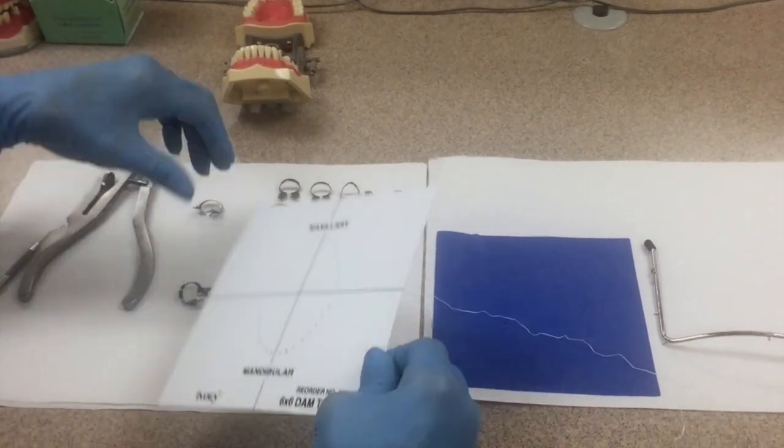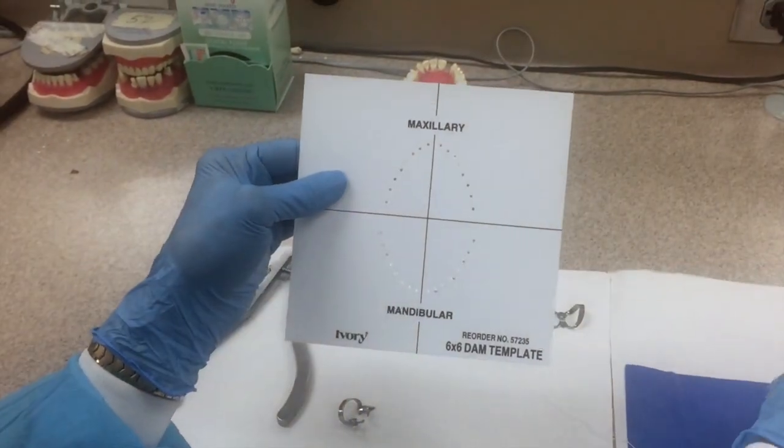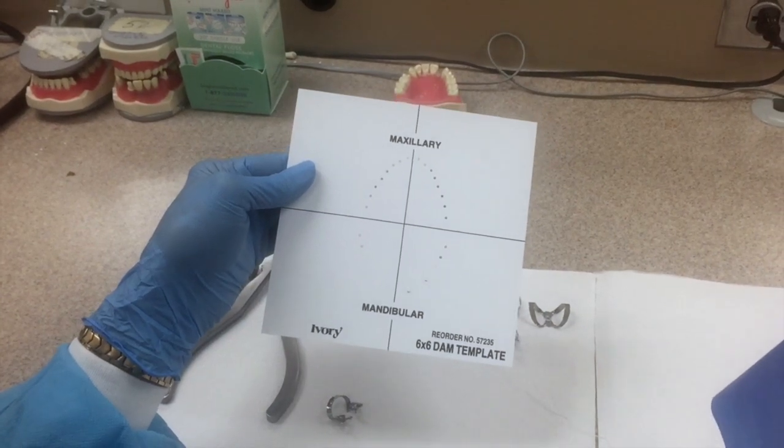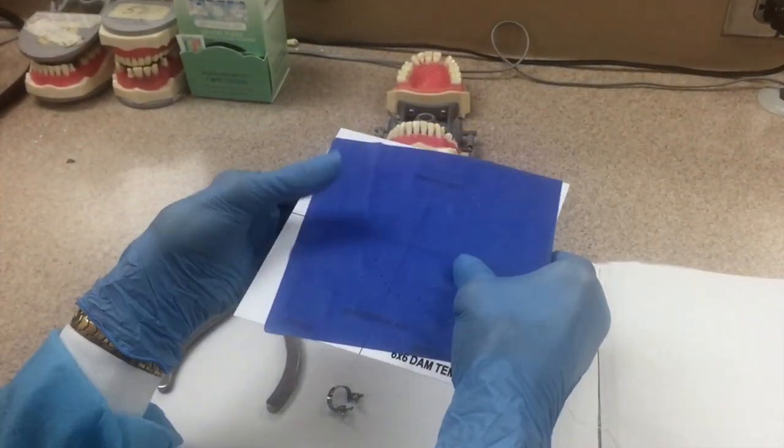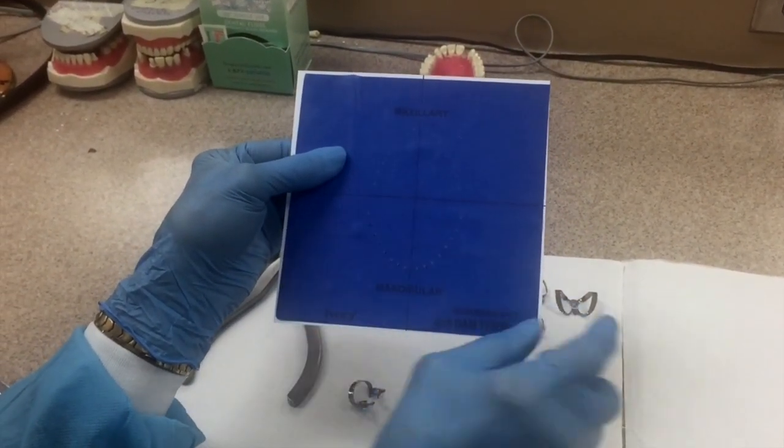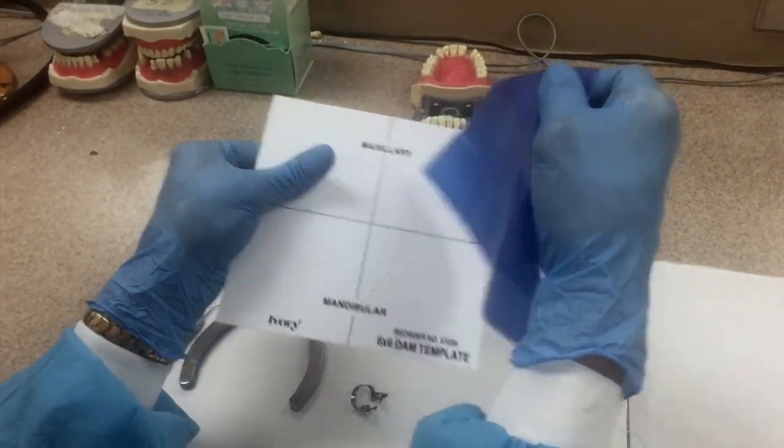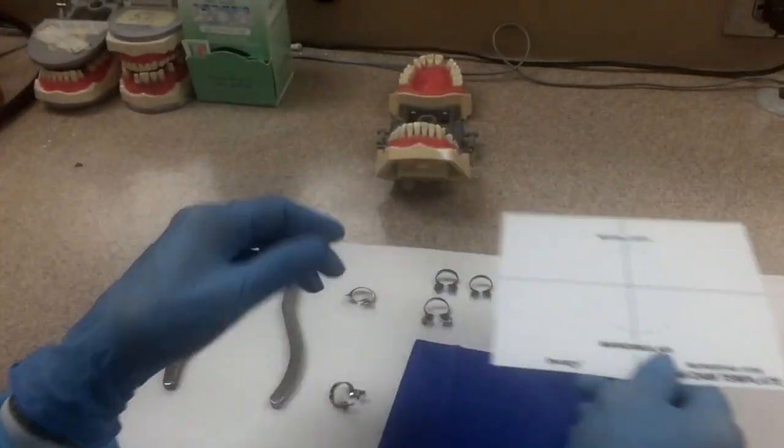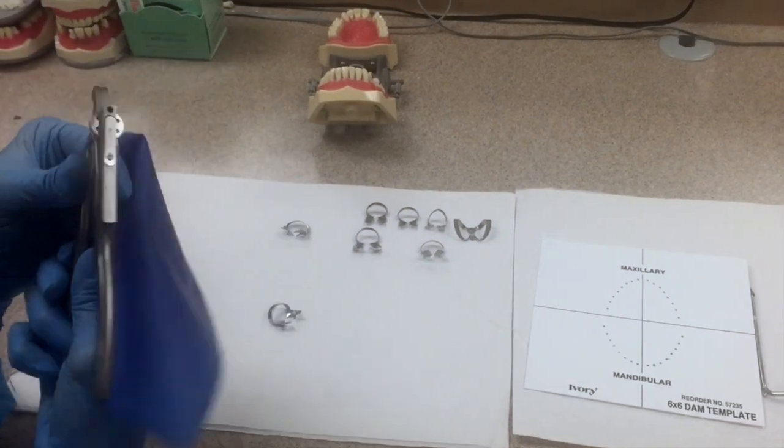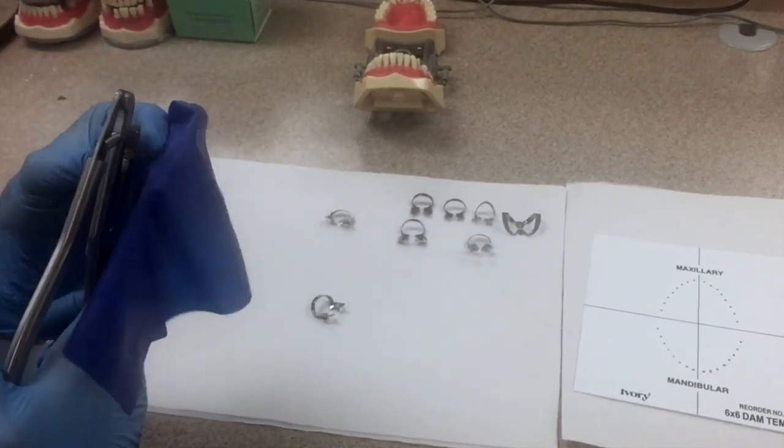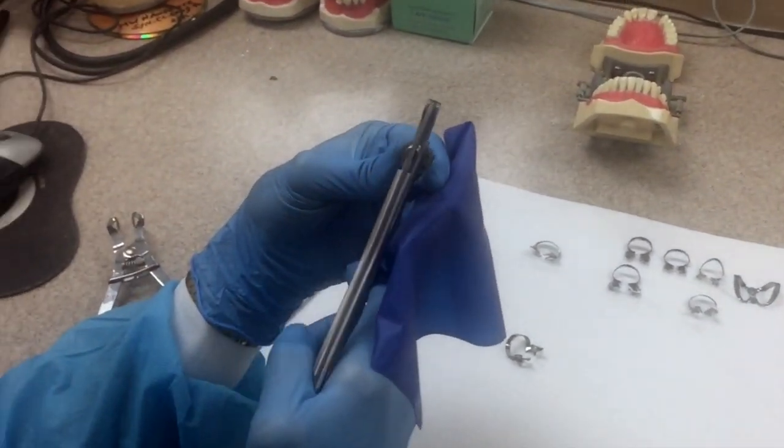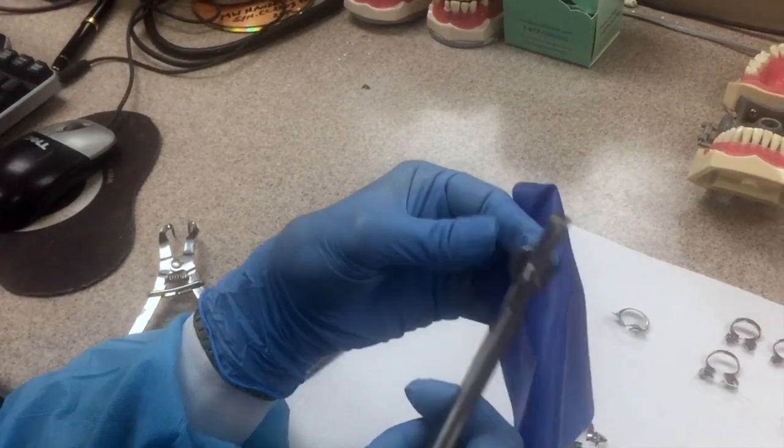This is a template. It's got little holes punched in it and we have to ascertain where we're going to put the holes in the rubber dam. We put the rubber dam over the template, take a ballpoint pen and we actually mark where we want the holes. Let's get busy and we're going to punch some holes in our rubber dam. This is a big molar, so let's use a big hole.